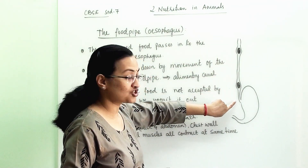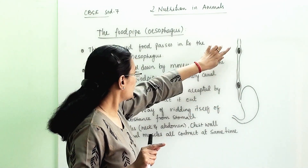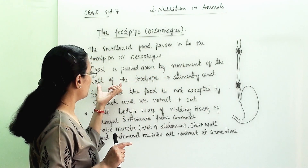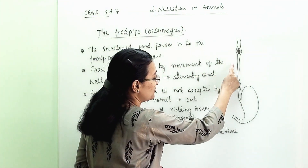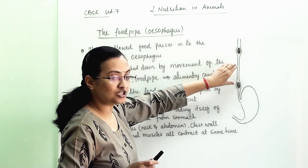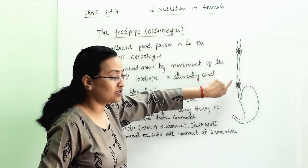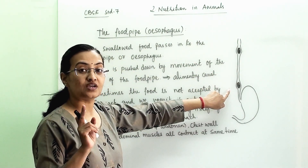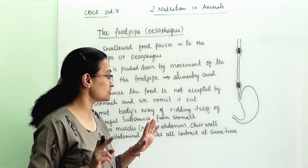The food pipe connects the mouth to the stomach. Food is pushed down by the movement of the wall of the food pipe. Part by part, the food goes to the stomach. This movement, which happens throughout the alimentary canal while we are eating, is known as peristalsis.